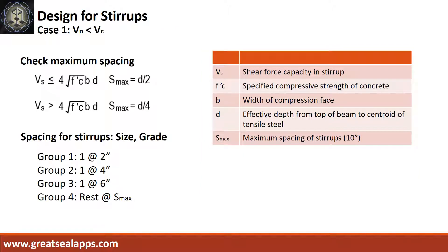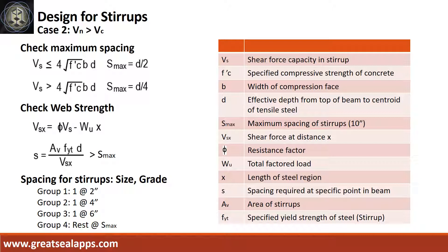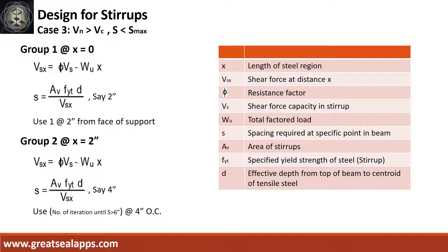For evaluation of stirrup design: Case 1 is where the design shear strength is less than the shear strength capacity of concrete — follow the slide for spacing of stirrups. Case 2 is when the design shear strength is greater than the shear strength capacity of concrete and the initial spacing from web strength is greater than maximum spacing of stirrups — refer to the current slide for spacing. Case 3 is when the design shear strength is greater than the shear strength capacity of concrete and the initial spacing from web strength is less than the maximum spacing of stirrups.